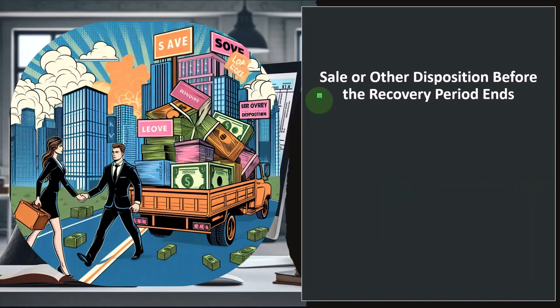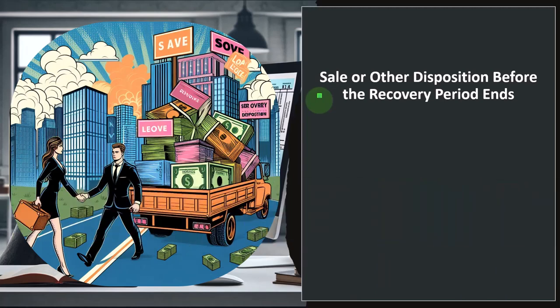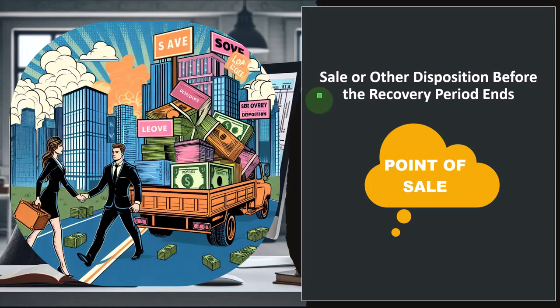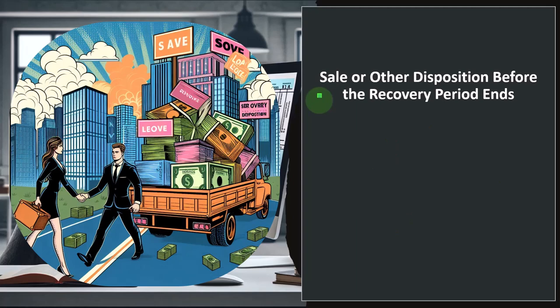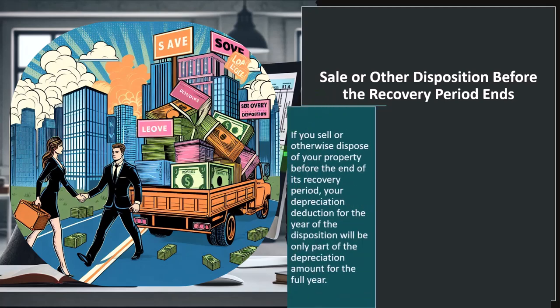When we take items off the books, we need to figure out the adjusted basis — in other words, how much of the potential deduction, say the $10,000, have we already taken a benefit on, and how much remains at the point of sale, which results in a lower gain. The bigger the basis, the lower the gain, which is good for taxes. If you sell or otherwise dispose of your property before the end of the recovery period, your depreciation deduction for the year of disposition will be only part of the depreciation amount for the full year.